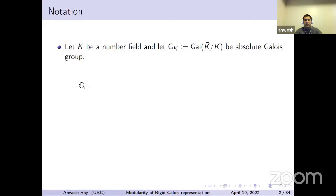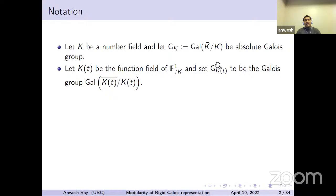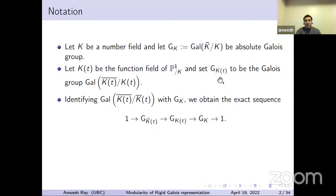K is going to be a number field. G_K is going to be the absolute Galois group of K — that is, the Galois group of the algebraic closure over K. K(T) is going to be the function field of P^1 over K, and its absolute Galois group is going to be denoted by G(K,T). We can identify the Galois group of K(T)-bar over K-bar(T) with G_K, and then we get this exact sequence of Galois groups.